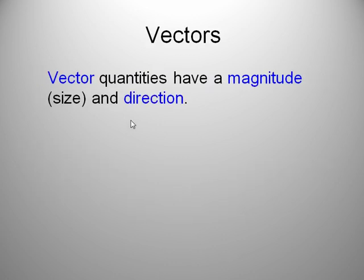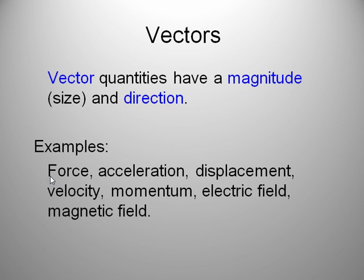Vectors, however, do have a direction associated with them. So in addition to a magnitude or the strength, examples of vectors are force, which was our odd one out there, acceleration, displacement, not distance, displacement, velocity, momentum, electric field, magnetic field. All of these quantities have some sort of direction associated with them.